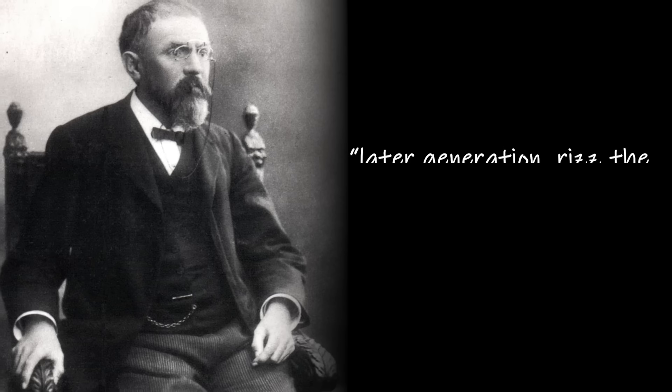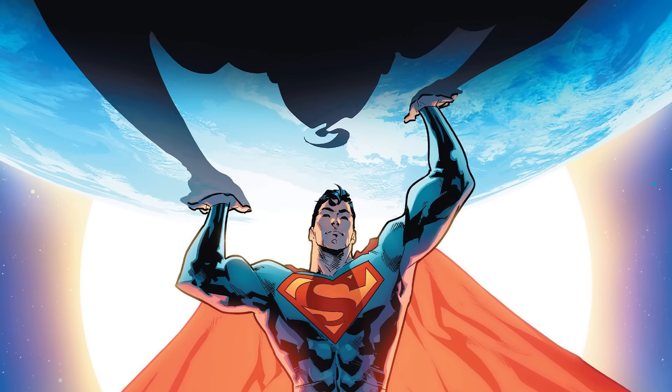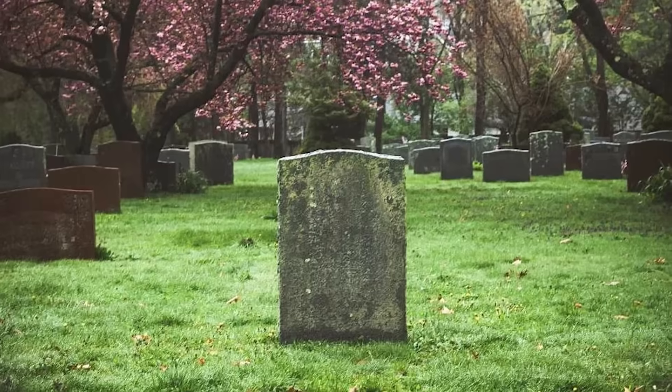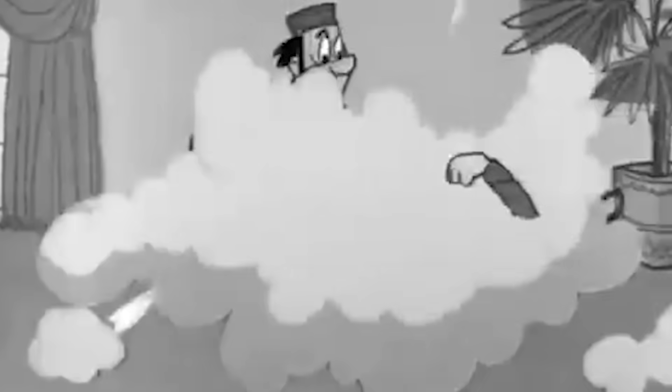In 1908, Henri Poincaré remarked that later generations would regard set theory as a disease from which one has recovered. You know set theory — that thing that all modern mathematical proofs rely on? Although his opinion no longer matters because he's dead, in modern times mathematicians generally just accept set theory without even being aware that this was once a heated, debated topic in mathematical circles. But there is still a very small percentage of mathematicians who believe that there are fundamental flaws in the foundations of set theory.